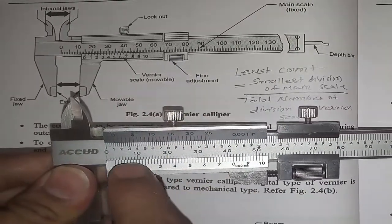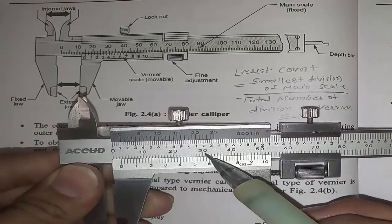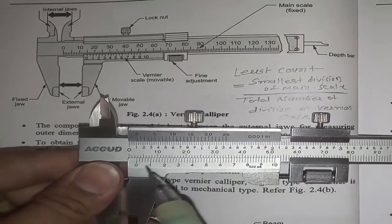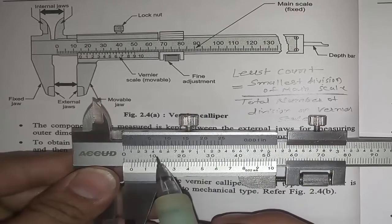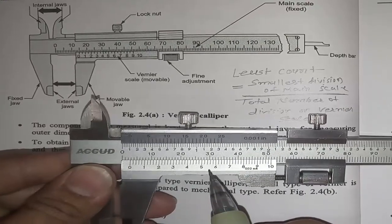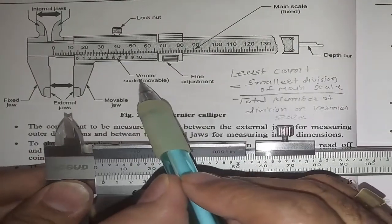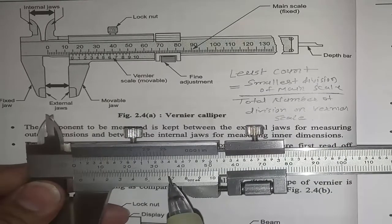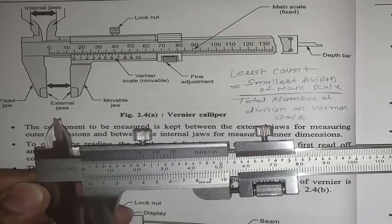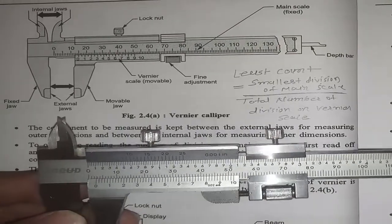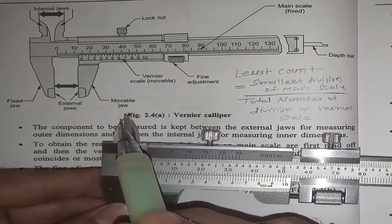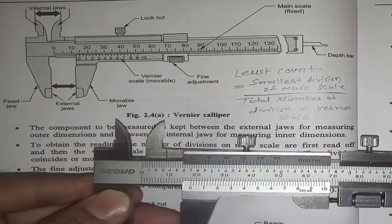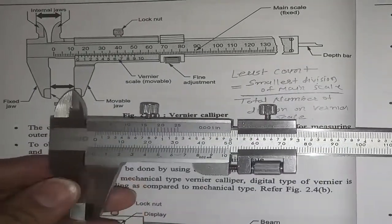The parts of the vernier caliper include: the lock nut, the main scale (showing 0, 10, 20, 30, 40 mm — we are considering millimeters only, not inches), and the vernier scale. There is also a fine adjustment element, a fixed jaw, and a movable jaw. If you want to measure internal dimensions such as internal diameter, you can measure using the upper jaws.